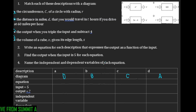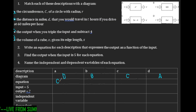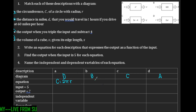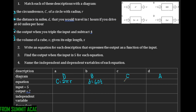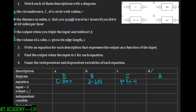Now write the equation that expresses output as a function of input. For diagram D: C equals two times pi times the radius. For diagram B: distance equals 60 times t. For diagram C, it's like slope-intercept form: y equals 3x minus 4. For diagram A: V equals s to the third power.